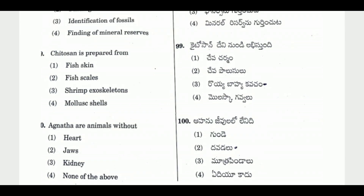Question 99: Chitosan is prepared from — the right answer is Option 3, Shrimp exoskeleton. Chitosan is derived from the exoskeleton of shrimp.